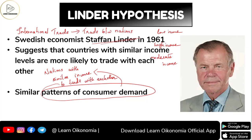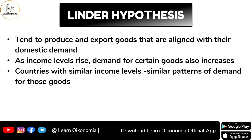And what is something extra that this person was saying? He was saying that nations with similar income levels would have a tendency to produce as well as export certain commodities that would be having an inclination with their domestic demand.